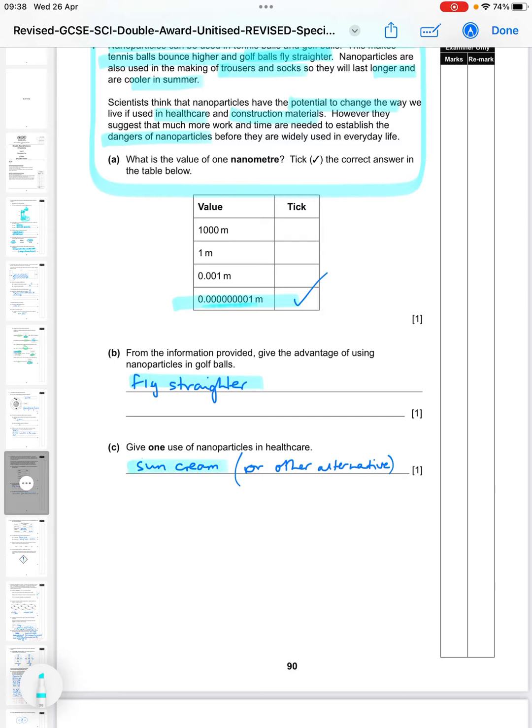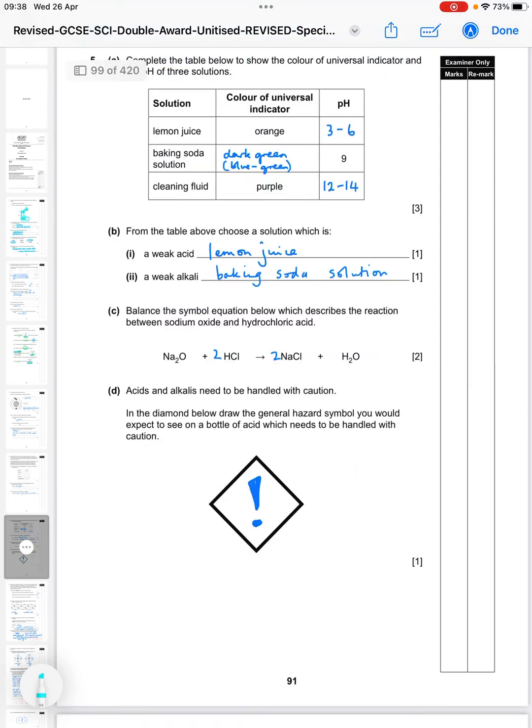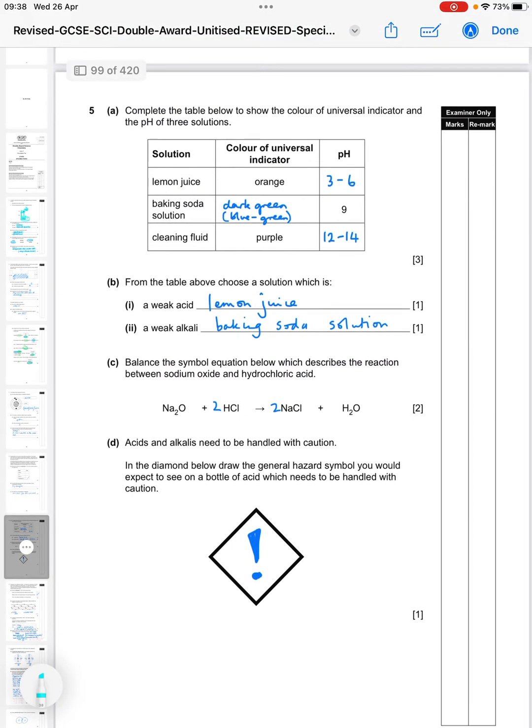Then give one use of nanoparticles in healthcare - the obvious one we would have done in class is as a sun cream. But you could give other alternatives which you had covered in your course. They would also get a mark. So the mark scheme just said sun cream or other alternative.